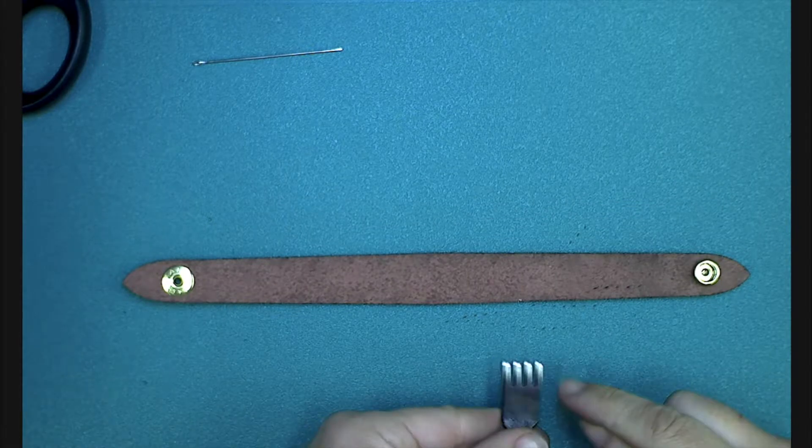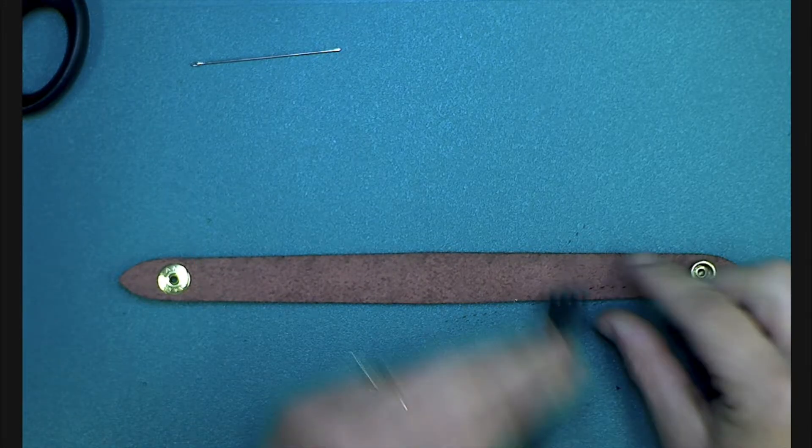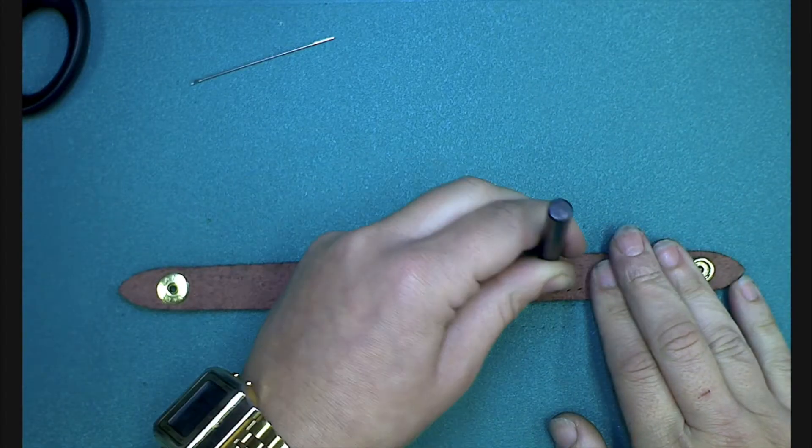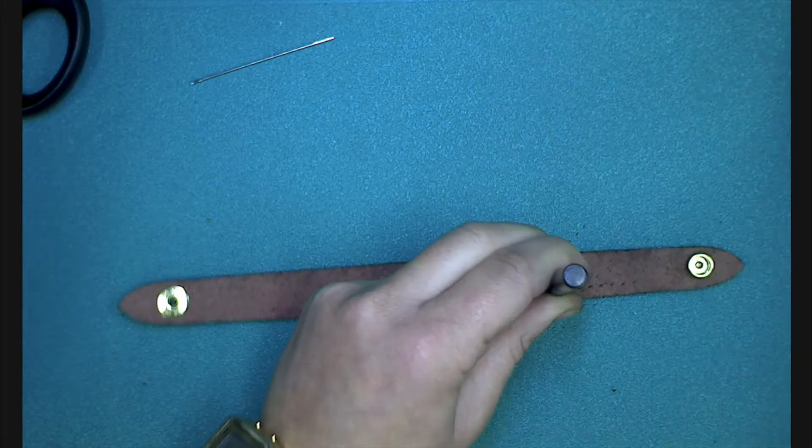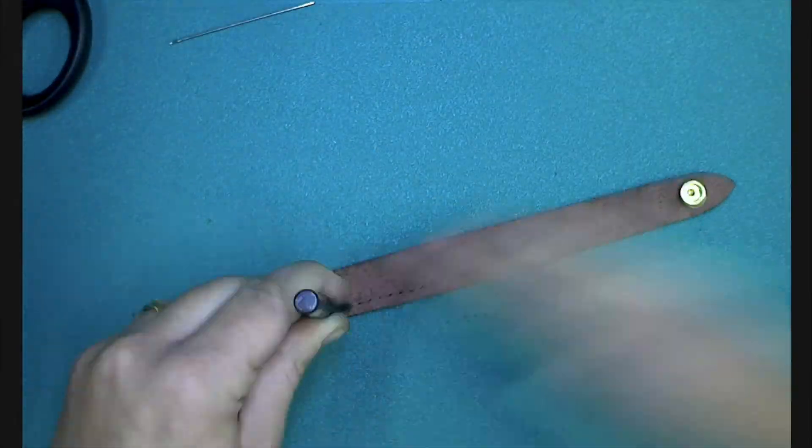To perforate the holes we're going to use the four prong chisel as we're going in a straight line. Using a wooden mallet, hammer the chisel through onto a chopping board. As you hammer your sets of four, in order to get a straight line put the first prong of the chisel into the last hole made.